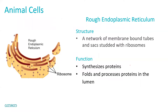Looking at the picture on the left, that is the entire endoplasmic reticulum. You can see all these little studs on the outside — those are the ribosomes — and inside each sac is the lumen, where proteins are folded and processed.